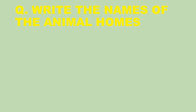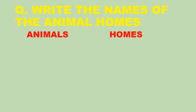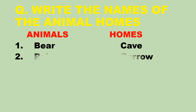Now children, the next question is: write the names of the animal homes. We have to write the names of the homes of the animals. The first one is bear — bear lives in a cave. Rabbit lives in a burrow.